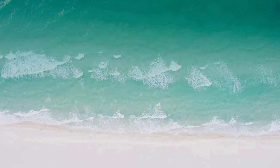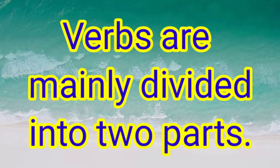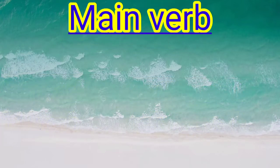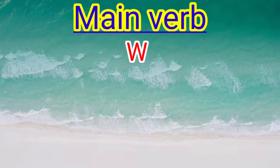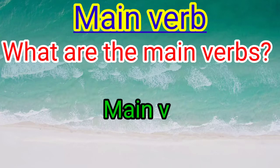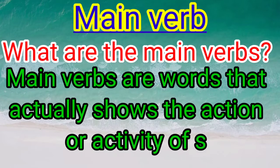Verbs are mainly divided into two parts: main verb and auxiliary verb. We can also say main verb as full verb, and auxiliary verb is also called helping verb. Main verbs are the words that actually show the action or activity of the subject.